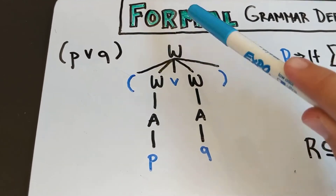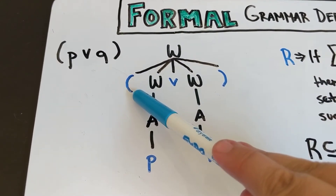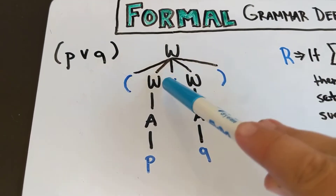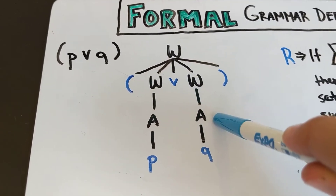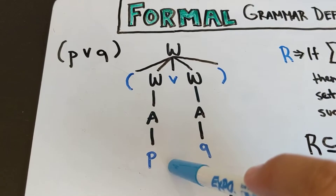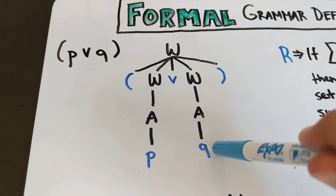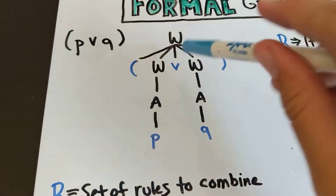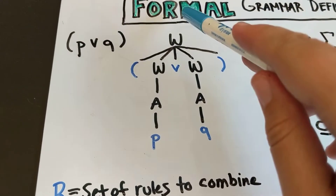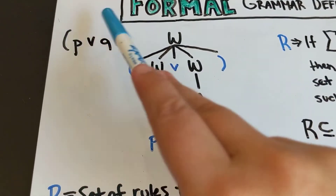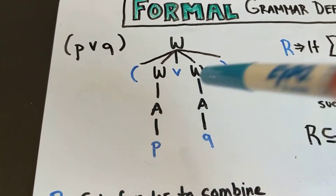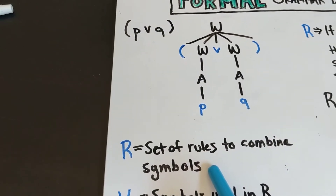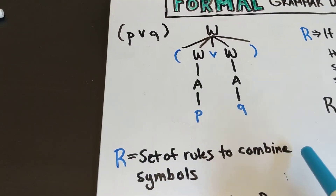We start with a well-formed formula. A well-formed formula can be made up of this symbol, followed by a well-formed formula, followed by this symbol, followed by a well-formed formula, followed by this symbol. A well-formed formula can be made up of an atomic statement, and an atomic statement can be made up of p or q, or any other lowercase letter. This is a method by which we can show that something at the top — some sort of statement — can be broken down into something at the bottom. R is going to be a set of those rules, so we know that any formal grammar has to have a set of rules that will do this.